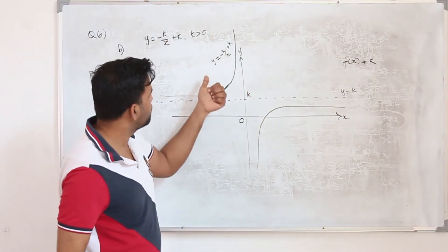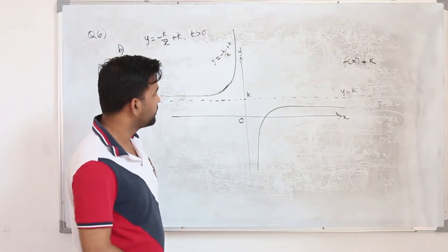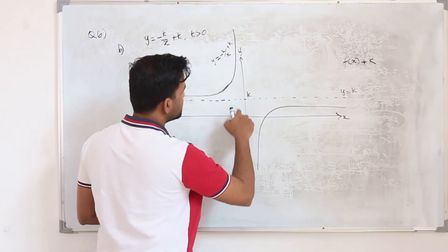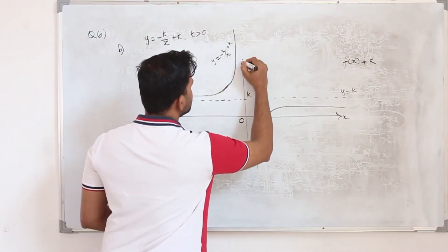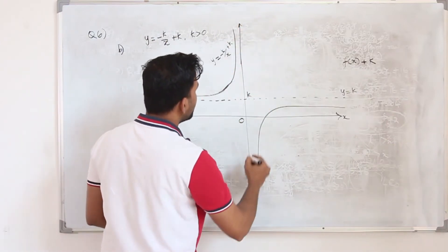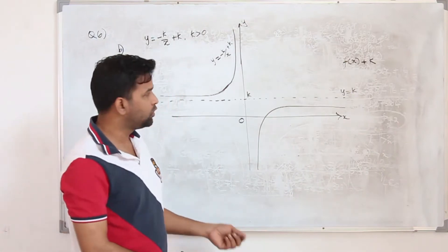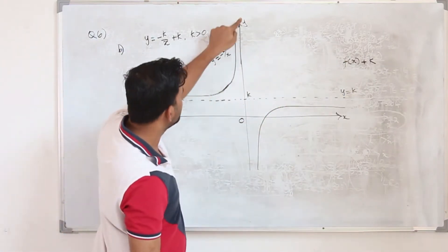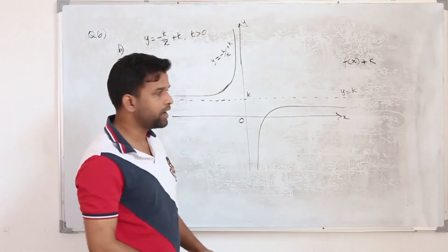That's our graph y equals minus k upon x plus k. This graph will not touch the y-axis because the y-axis is also an asymptote. If asked to write the equations of the asymptotes, there is one horizontal asymptote y equals k and the vertical asymptote x equals 0, which is the equation of the y-axis.